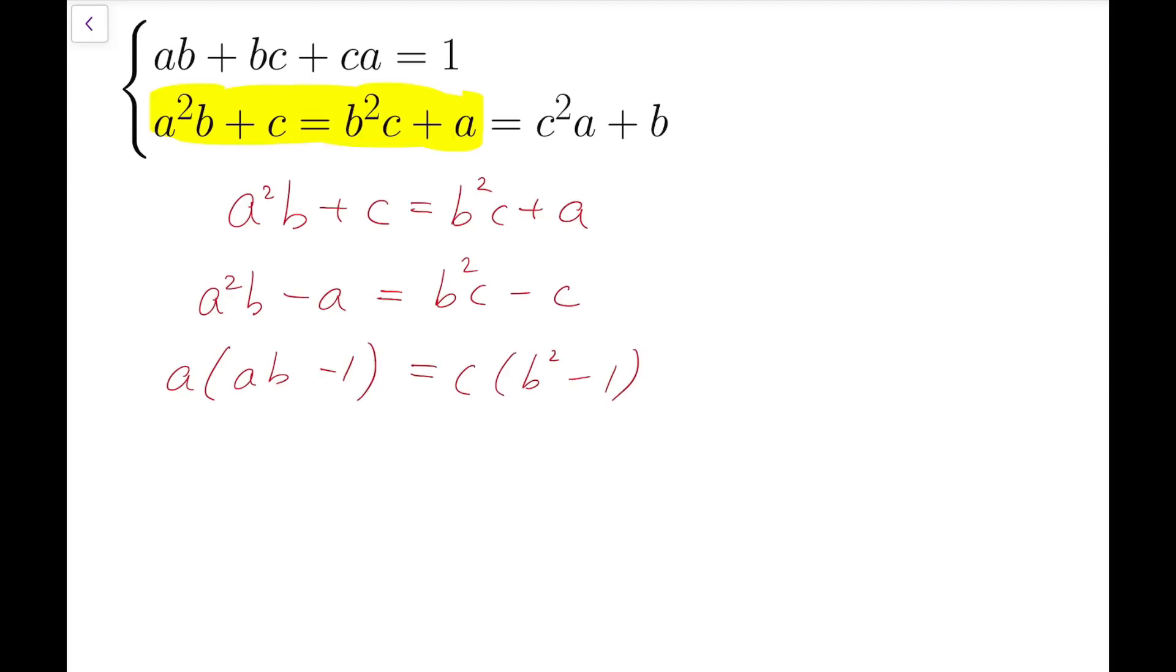Notice that at the left side of this equation, ab and 1 both appear again in our first equation. So we can combine them and see what we can get. Now a times (-bc - ca) from the first equation equals c times (b² - 1).